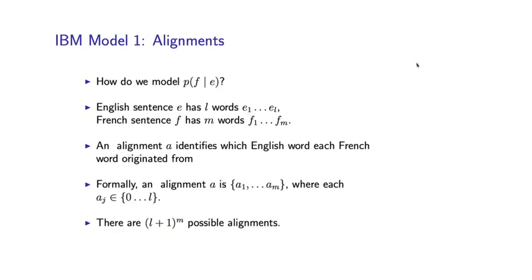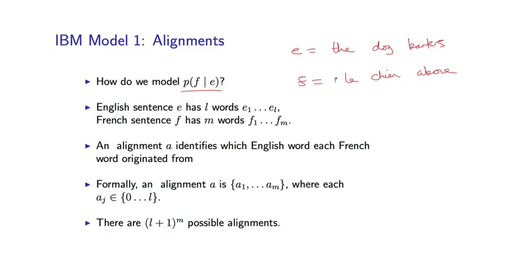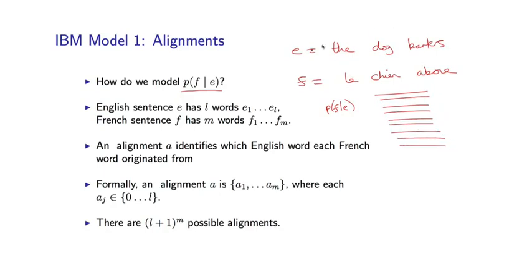So now let's talk about IBM Model 1. The critical question is how do we define a model P(F|E)? So we might, for example, have an English sentence like 'the dog barks' — so this is E — and this is a French sentence, which I believe is a reasonable translation to French, although my French is terrible. And so we want to assign this pair of sentences a conditional probability, or more generally, this is one of many possible translations for the English. We want to define a distribution over all possible French sentences paired with this English sentence.